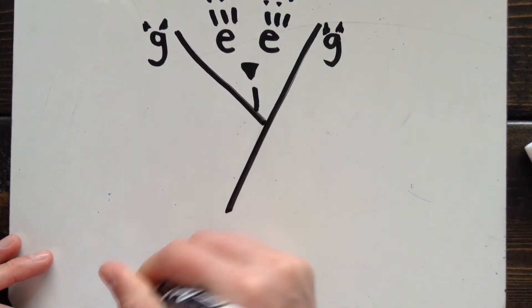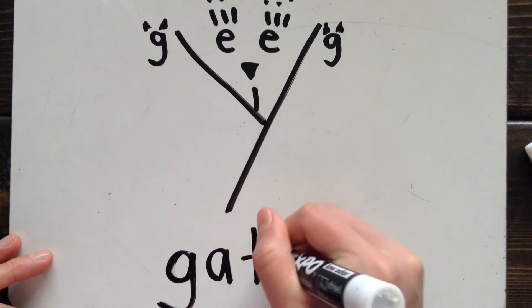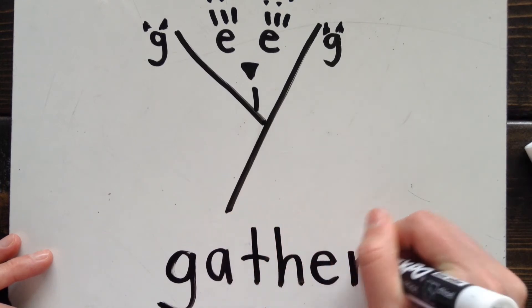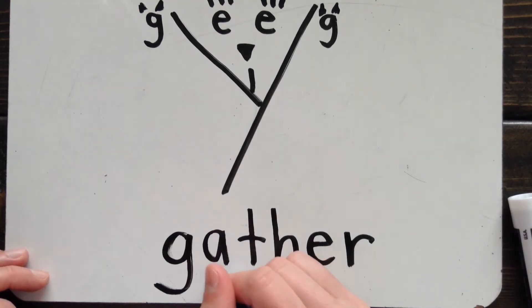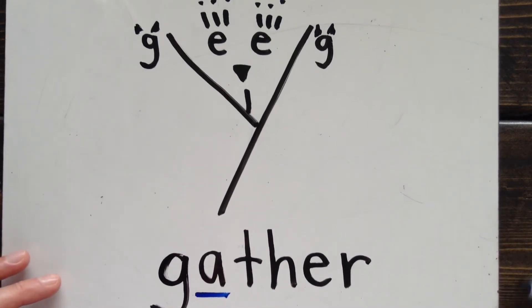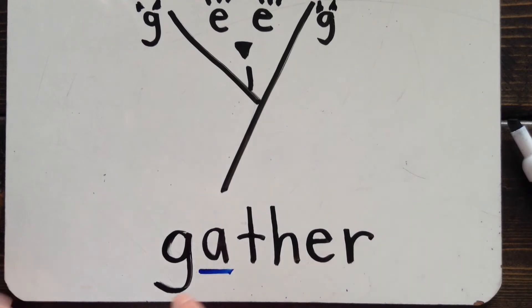Here's another example. This is the word gather. It's not jather. I know it's gather because the letter that comes after the G is not in my Gigi Cat picture. No cat ears for the G. So now I know it is the hard sound. Gather.